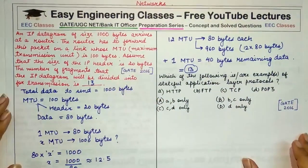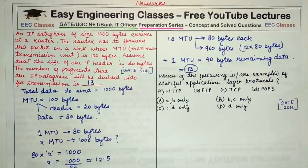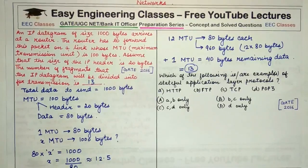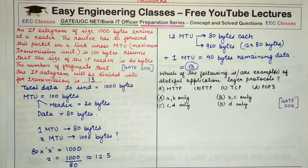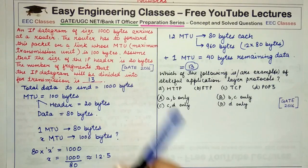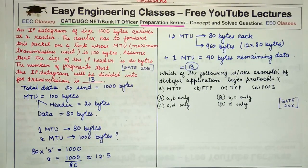The number of fragments the IP datagram will be divided into is 12 + 1 = 13 fragments. To summarize: across a network we can only send a fragment of size equal to the MTU. With MTU = 100 bytes and a 20-byte header, each fragment carries 80 bytes of data, requiring 13 total fragments. The answer is 13.